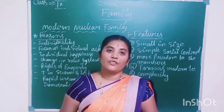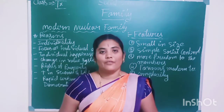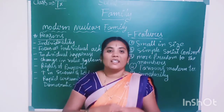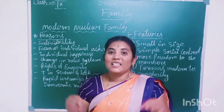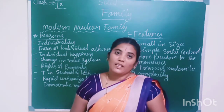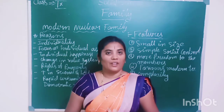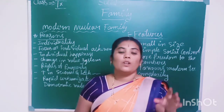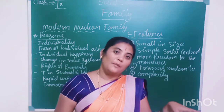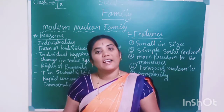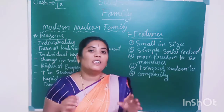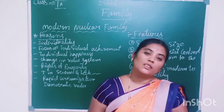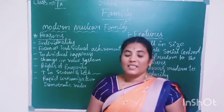What is the meaning of modern family? What is the meaning of joint family? Modern family means husband, wife and their unmarried children living together — this is called the modern nuclear family. This is also called the central family. Father, mother and their unmarried children living together is called nuclear family, or modern nuclear family.